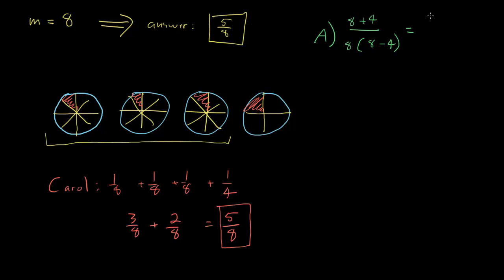Answer choice A becomes eight plus four divided by eight times eight minus four. The top here becomes 12. The bottom becomes eight times four, or 32. Is 12 ever going to reduce down to five? No, if we're going to get a fraction that reduces to five eighths, the top needs to be a multiple of five, and the bottom needs to be a multiple of eight, and that's not the case on the top here, so we know that A is not the answer.